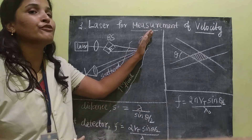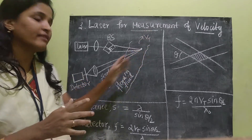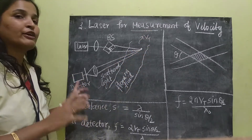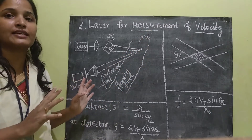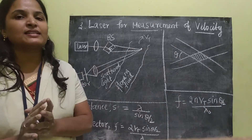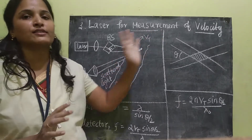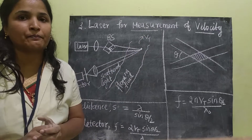The velocity flow can be found by the frequency shift that is recorded in the detector. This is the principle of this velocity measurement.